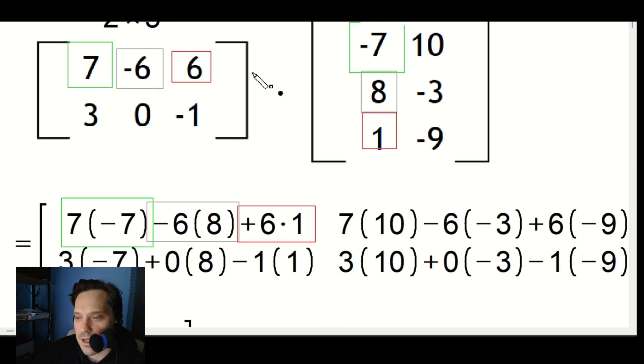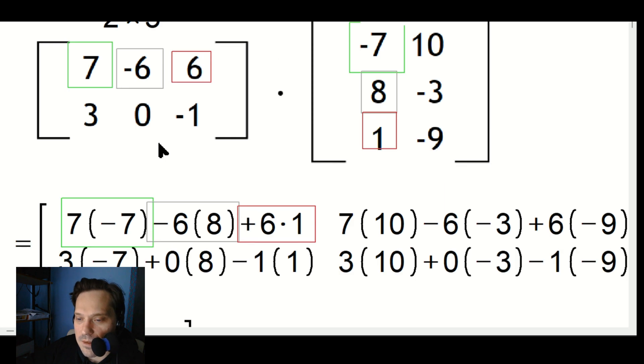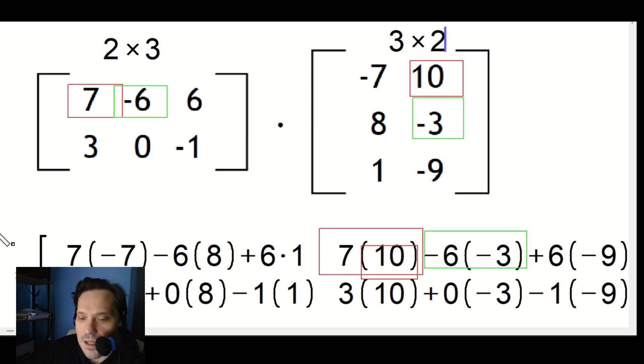Then multiply the 6 by the 1, that's going to give you positive 6 times 1. Look very carefully at the boxes here: green, green, gray, gray, and then red, red. That generates this entry here. Now for this one you're going to do 7 times 10, then -6 times -3, and then 6 times -9. That's how you generate that row.